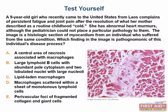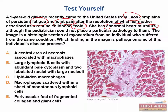So in this vignette, we have a 9-year-old girl who recently came to the United States from Laos. She's complaining of persistent fatigue and joint pain after the resolution of what her mother described as a routine childhood cold. She has abnormal heart murmurs, although the pediatrician could not place a particular pathology to them. The image is a histologic section of the myocardium from an individual who suffered the same condition. Which finding in the image is pathognomonic of this individual's disease process?